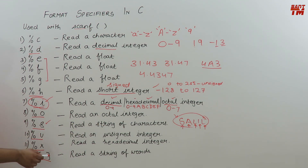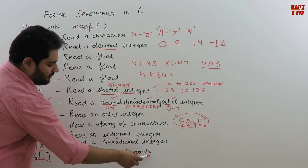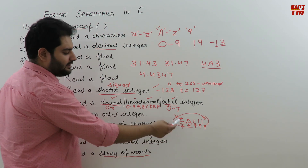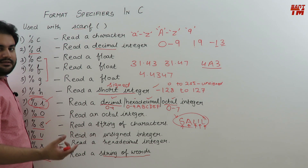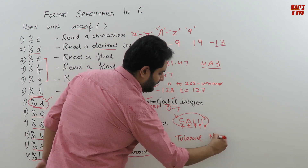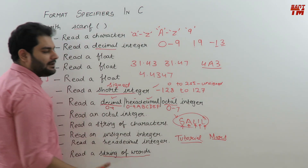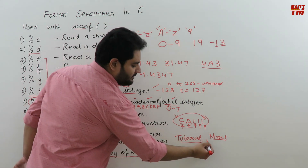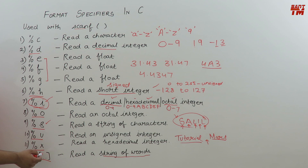The %[...] format specifier — that is % followed by square brackets with dots inside — is used to read a string of words. While %s reads a string of characters (one word), %[...] can read multiple words separated by spaces or other characters. For example, 'Tutorial Mart' is a string of two words and can be read using this specifier. These are all the format specifiers used with the scanf statement.